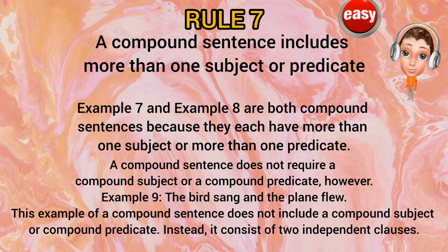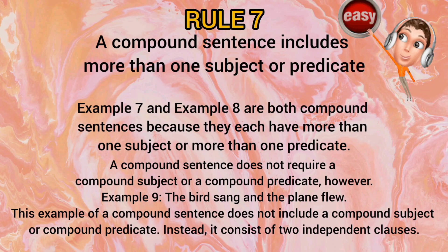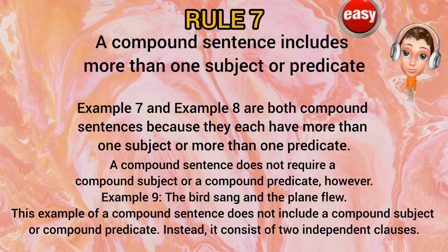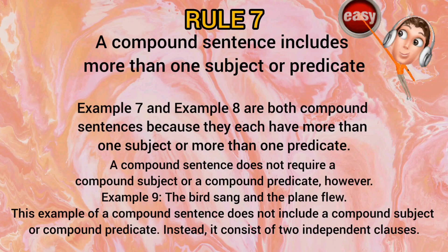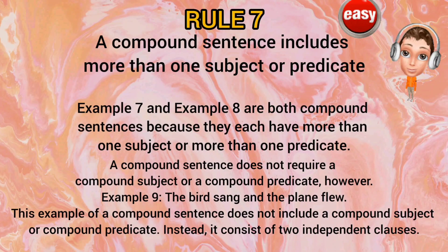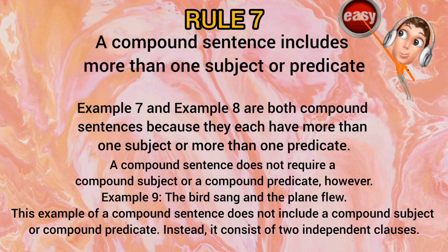Rule number 7: A compound sentence includes more than one subject or predicate. A compound sentence does not require a compound subject or a compound predicate. For example, 'The bird sang and the plane flew.' This is a compound sentence with two independent clauses — 'The bird sang' and 'The plane flew' — both of which are complete sentences joined by a conjunction.